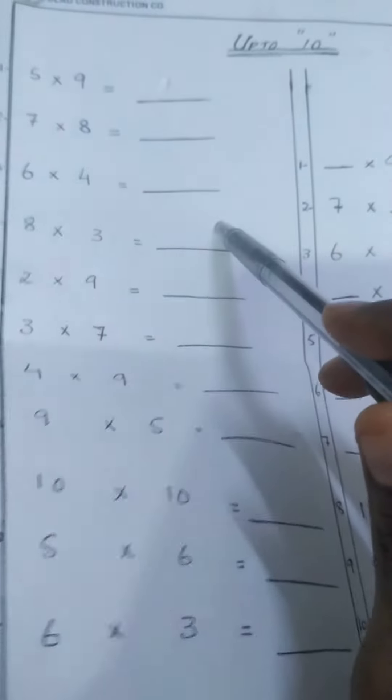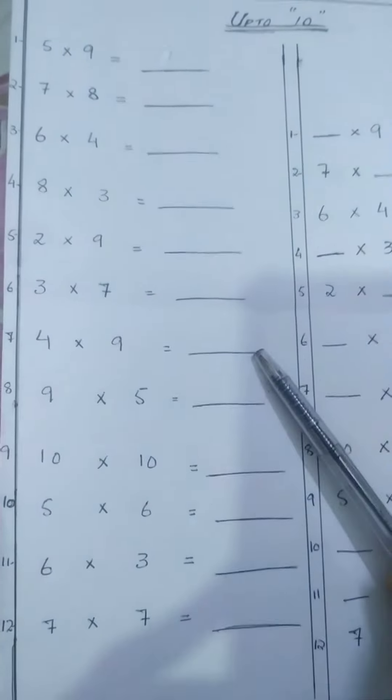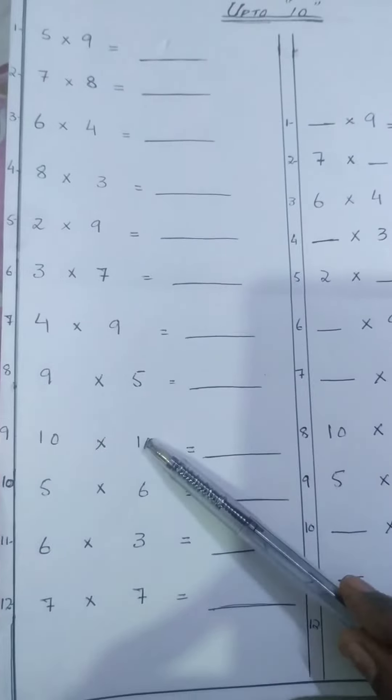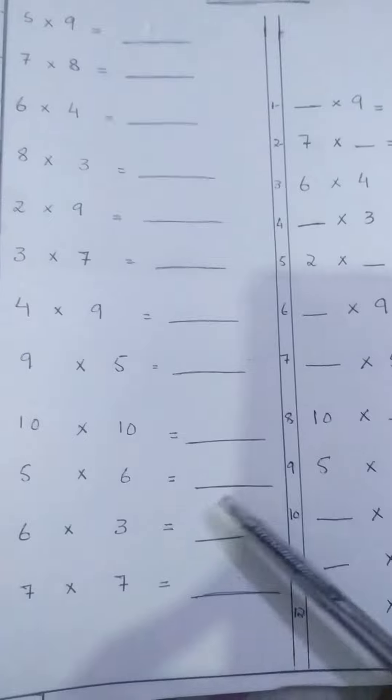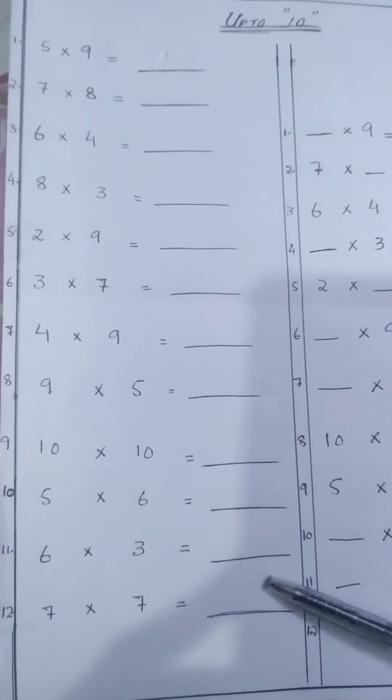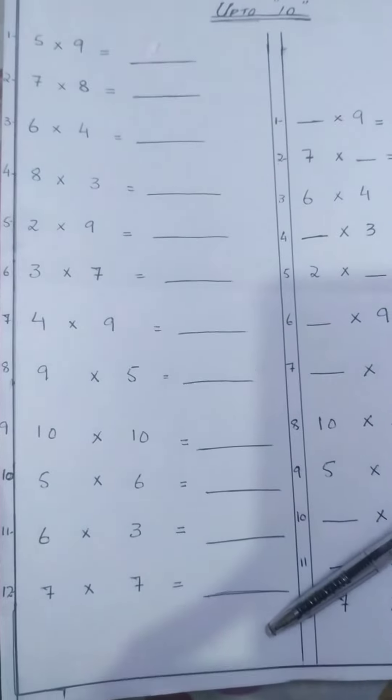6 x 4s are this, 8 x 3s are this, 2 x 9s are, 3 x 7s are, 4 x 9s are, 9 x 5s are, 10 x 10s are, 5 x 6s are, 6 x 3s are, and 7 x 7s are. You have only 3 seconds to write these answers.